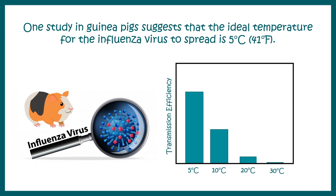One study also suggests that temperature has a nice correlation with the efficiency of viral transmission. At 5 degrees centigrade, the influenza virus transmits more efficiently than at other temperatures.